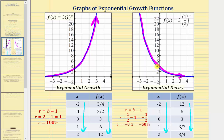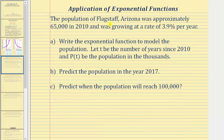Now let's look at some applications of exponential functions. The population of Flagstaff, Arizona was approximately 65,000 in 2010, and was growing at a rate of 3.9% per year. We're asked to write the exponential function to model the population, letting t be the number of years since 2010, and p of t be the population in thousands. Then we'll predict the population in 2017, and predict when the population will reach 100,000.